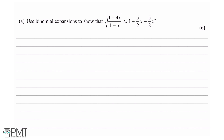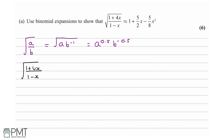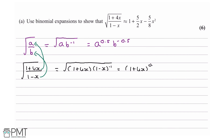The first rule I'm going to use is that the square root of a over b equals the square root of a times b to the minus 1, which equals a to the 0.5 times b to the minus 0.5. Applying that, we let a be 1 plus 4x and b be 1 minus x. So this equals the square root of 1 plus 4x times 1 minus x to the minus 1, which equals 1 plus 4x to the half times 1 minus x to the minus half.